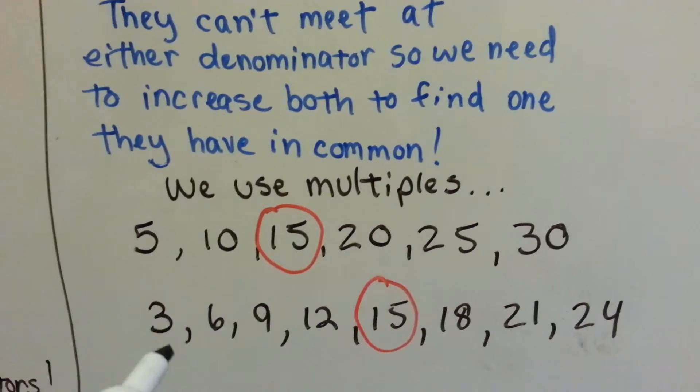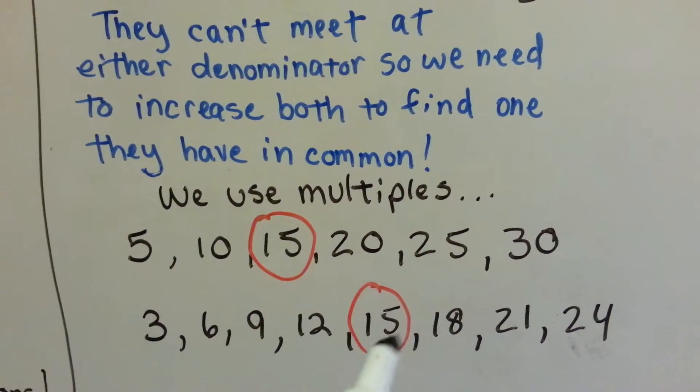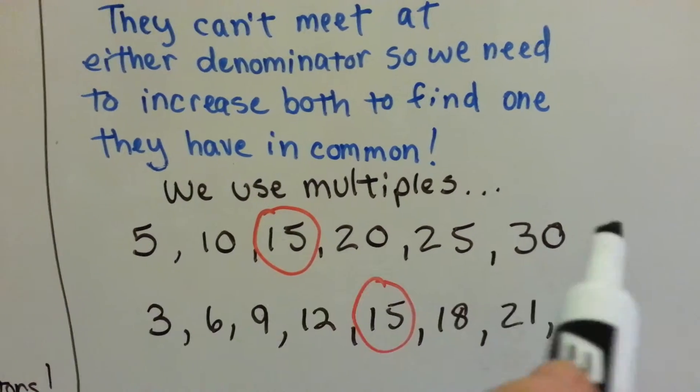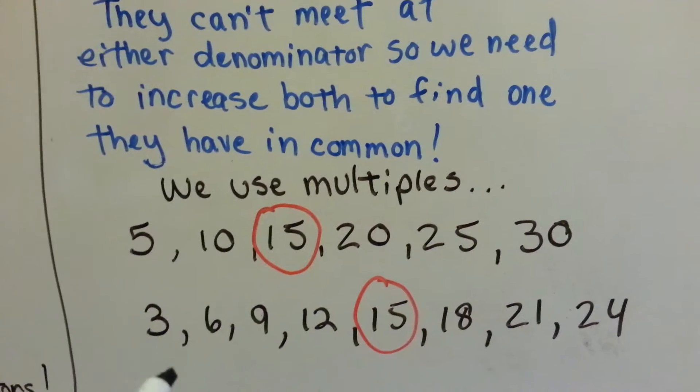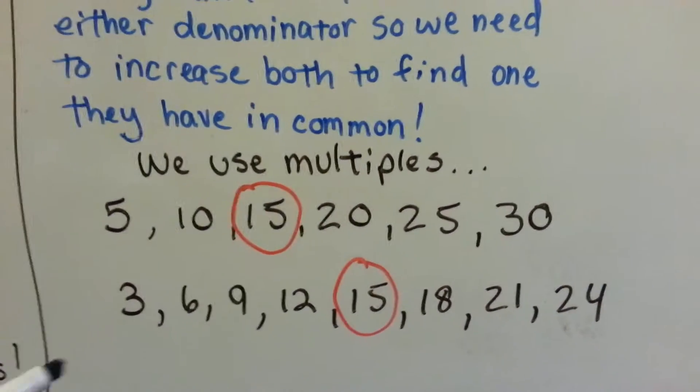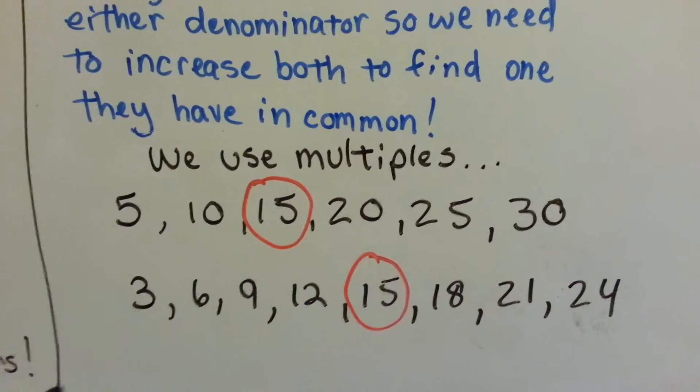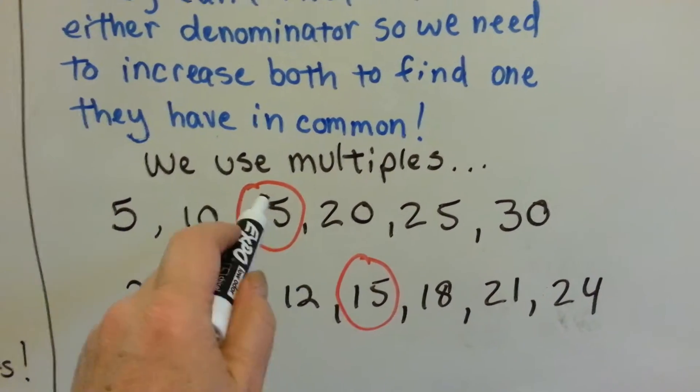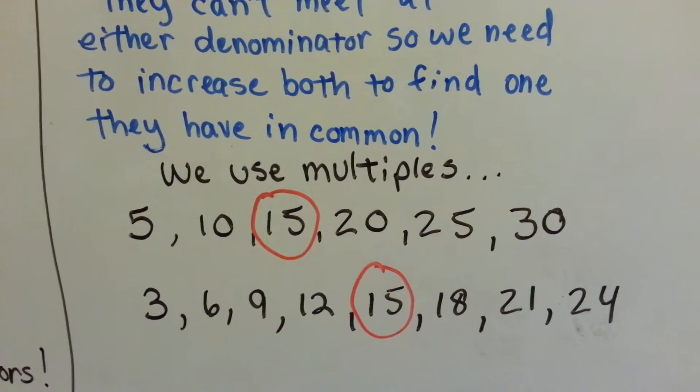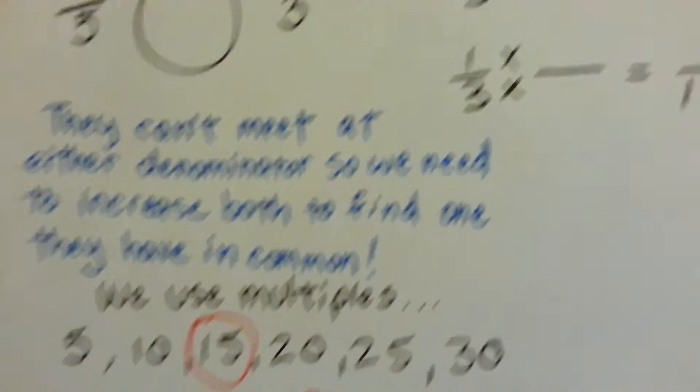And the 3's would be 3, 6, 9, 12, 15, 18, 21, 24. These are all the answers in the 3 times table and the 5 times table. We look for the smallest one, the least multiple that they have in common, also known as the least common multiple, which is 15, and we know that they can each become a fraction with 15 as the denominator.